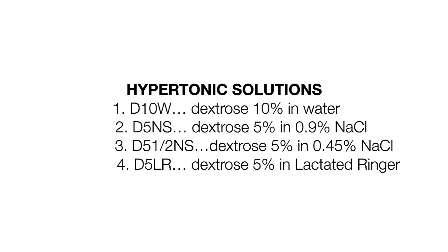Some examples of hypertonic solutions include: D10W, which is dextrose 10% in water; D5NS, which is dextrose 5% in 0.9% sodium chloride; D5 half NS, which is dextrose 5% in 0.45% sodium chloride; and D5LR, which is dextrose 5% in lactated Ringer.